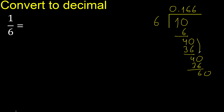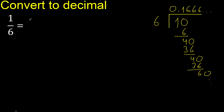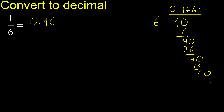This repeats. The remainder repeats, therefore 6 repeats. So 1 divided by 6 equals 0.1666... — the 6 repeats like this.